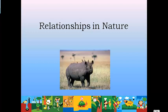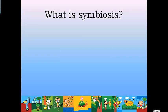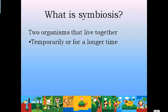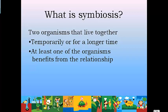Today we're going to talk about different relationships in nature and between organisms. First thing you need to know is what symbiosis is. Symbiosis is when two organisms live together. It can be for a short period of time or a long period of time, it doesn't matter. But at least one of the organisms living together has to benefit from the relationship. When I say organisms, I mean two different types of organisms.